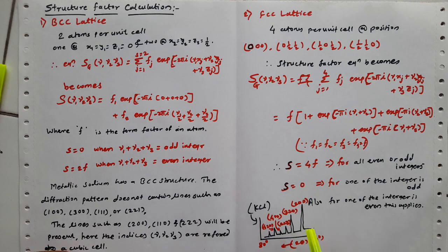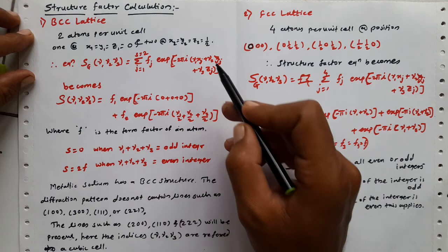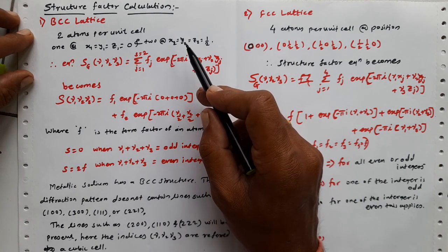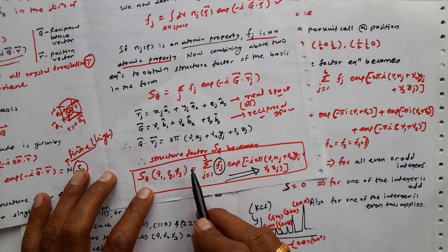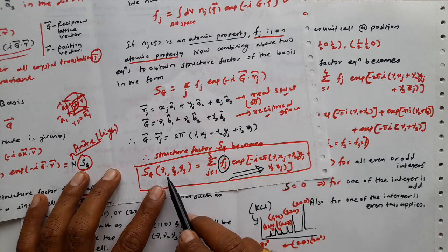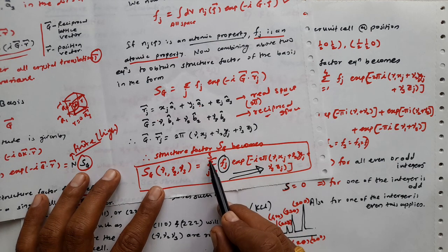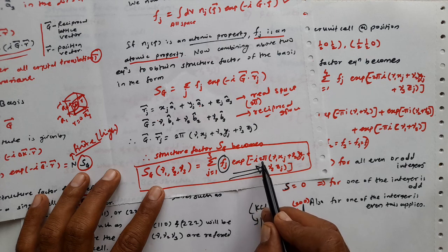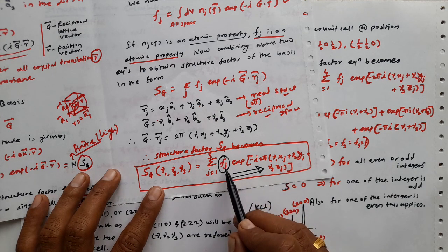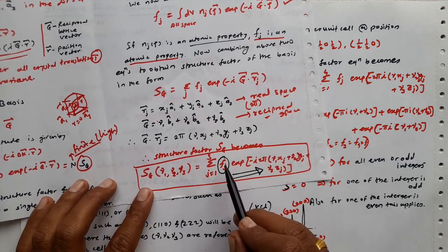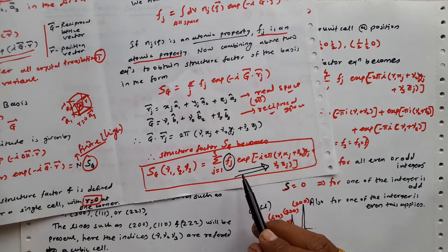Hello friends. In the last lecture we talked about the theory part of the structure factor. Today we will try to see examples of how to calculate the structure factor. As we have seen in the last lecture, the structure factor S_g is a function of nu1, nu2, nu3, equal to summation over j from 1 to s, where F_j is the scattering amplitude from each atom present in that particular unit cell.